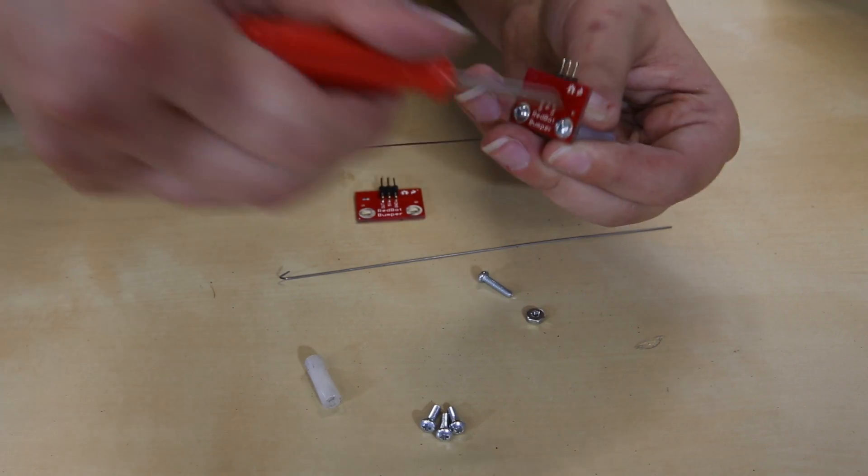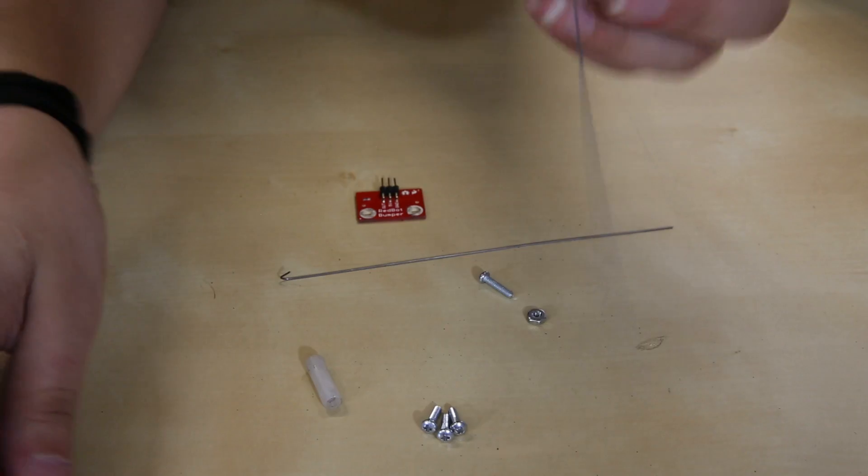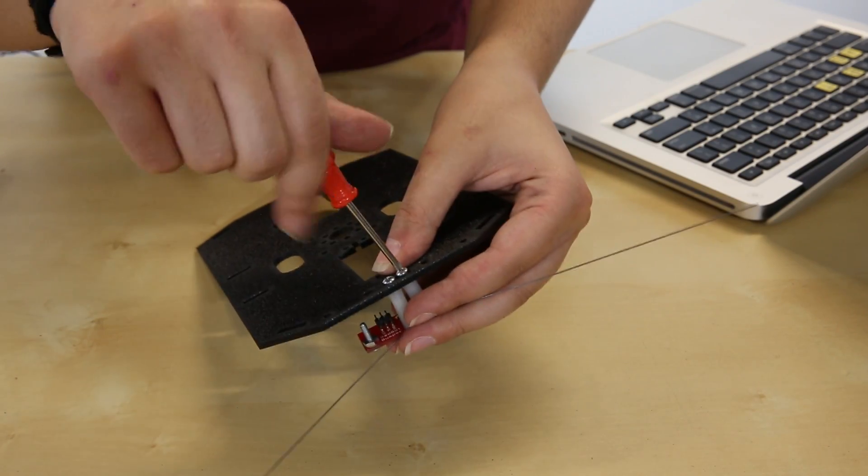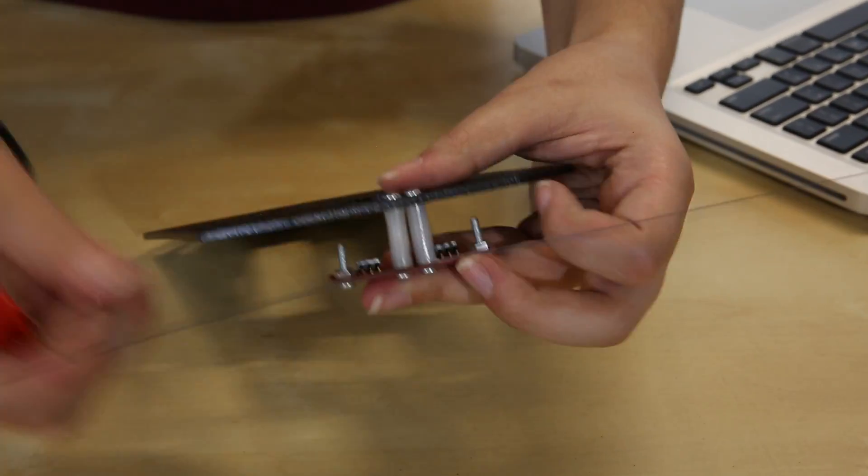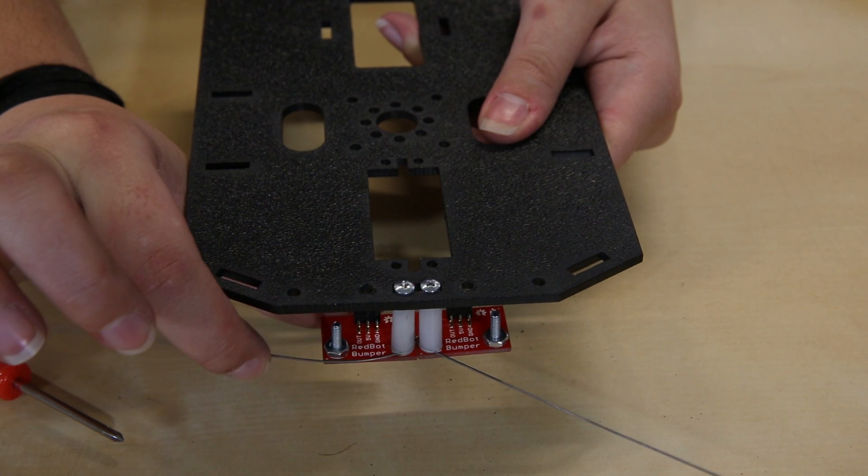When you're screwing them in, you want to make sure that it doesn't hit the nut and the screw because that's going to be what causes the signal to send saying that the bumper has been hit. They recommend that you bend these and you can do it in any crazy shape that you would want to, but just make sure that you're not shorting that circuit unless you want to be shorting it.